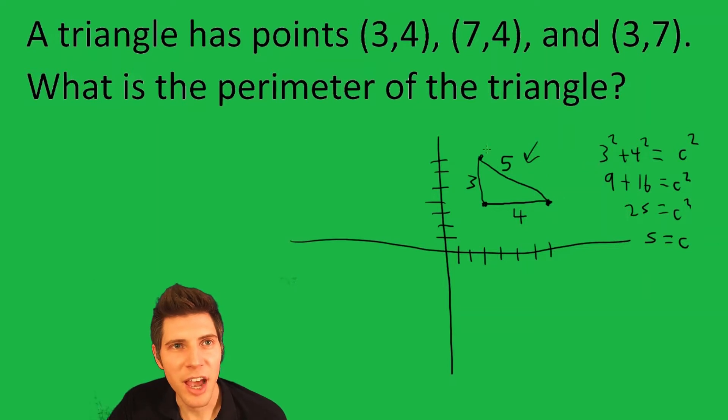They want to know what the perimeter is. We just add up the three sides: 3 + 4 + 5 is 12.